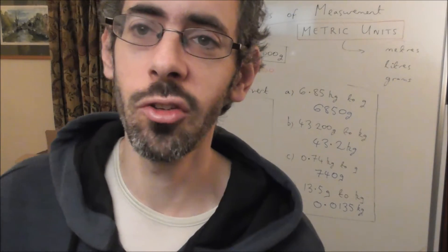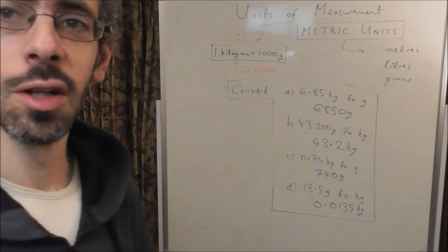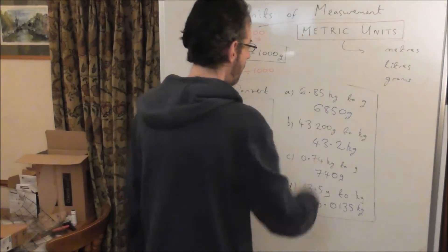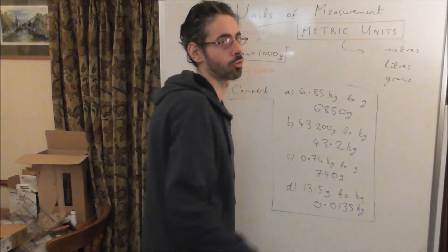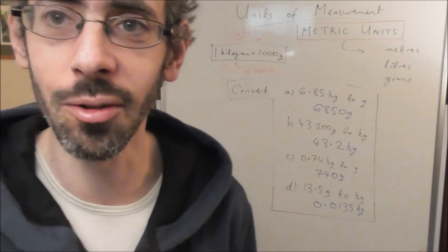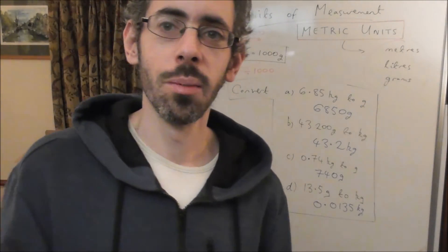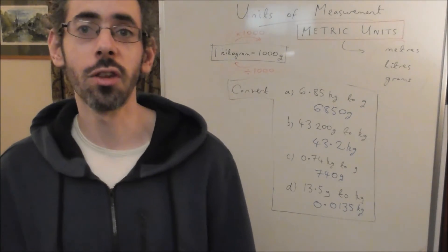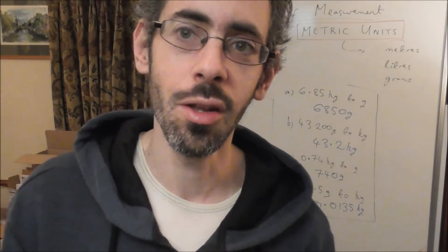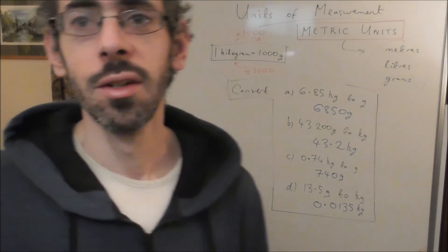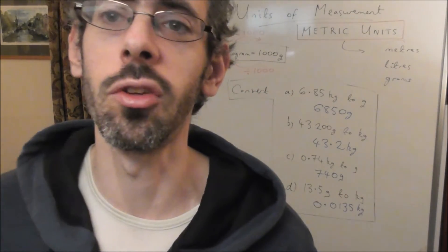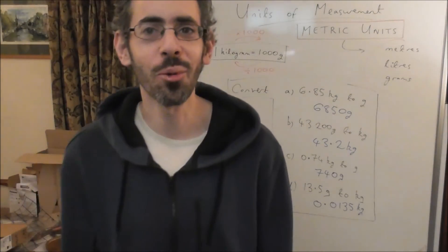Right, that's the end of the lesson. Just remember: when you're converting from one unit to another, there should always be more of the smaller unit. For example, if you're converting between kilograms and grams, there should always be more grams than kilograms — grams are a lot smaller, so there should be a lot more of them. That's something to check when you do these sorts of questions. I'm going to put some practice questions at the end of the video for anyone who wants to practise, along with the answers — so pause the video, have a go, then look at the answers. Here are the questions. Bye.